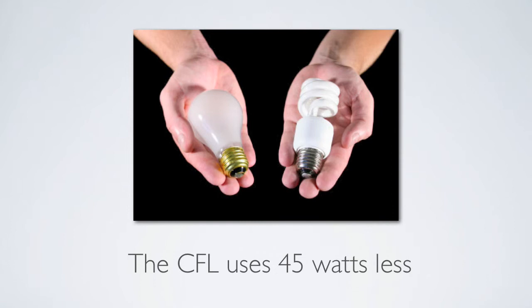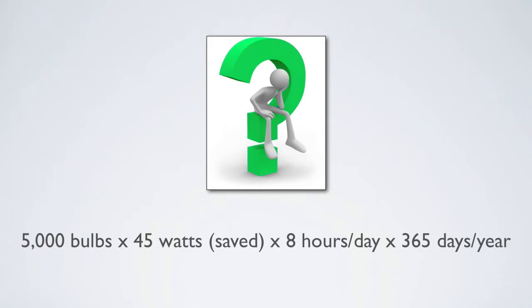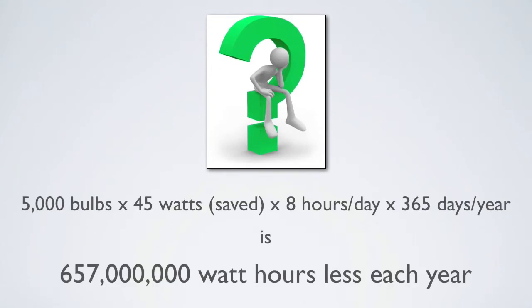To determine savings from the new bulbs, we must multiply the energy savings from each individual bulb by the number of bulbs replaced, by the number of hours in operation each year. This will give us the total amount of electricity saved each year. 5,000 bulbs times 45 watts saved times 8 hours a day times 365 days per year gives us 657 million watt-hours.